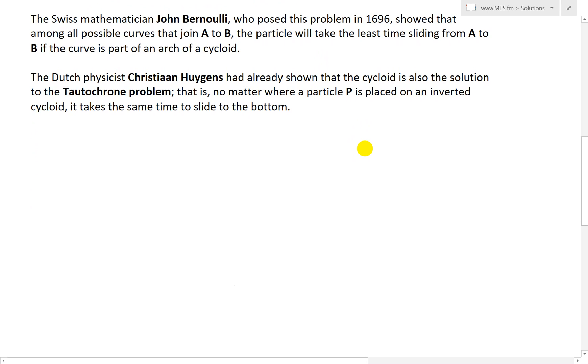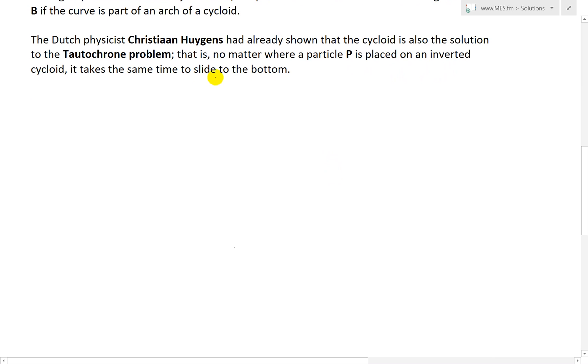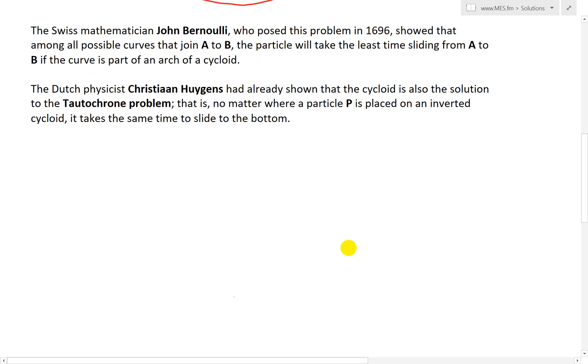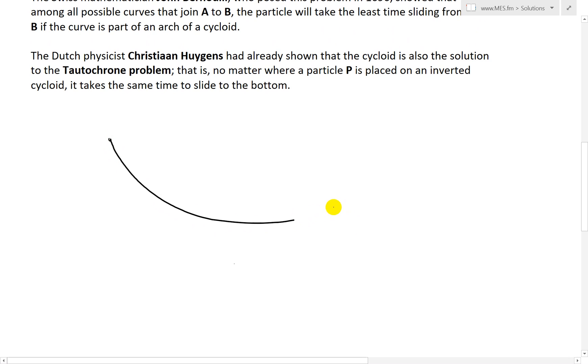And also further into the history of the cycloid, the Dutch physicist Christiaan Huygens had already shown that the cycloid is also the solution to the tautochrone problem. I think that's how you pronounce it. That is, no matter where a particle P is placed on an inverted cycloid, it takes the same time to slide to the bottom. This is one of the more fascinating stuff. So basically if you had a cycloid shape like this, an inverted one, and basically if you had a particle P here, I'll call this P1. And just to show you that if you were to drop this and then see how long it takes to get to here, to the bottom. Let's write this is the bottom.